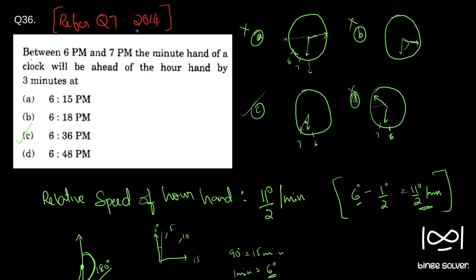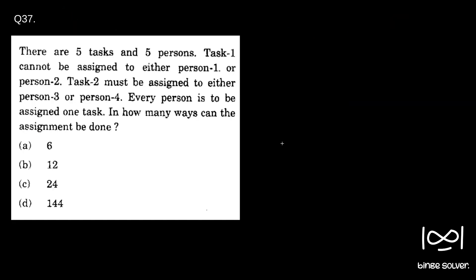The solution to question 36 is C. Now let's move on to question 37. There are five tasks and five persons. Task 1 cannot be assigned to either person 1 or person 2. I'll mark them T1, T2, T3, T4, T5. Task 2 must be assigned to either person 3 or person 4. Every person is to be assigned exactly one task — in how many ways can the assignment be done?